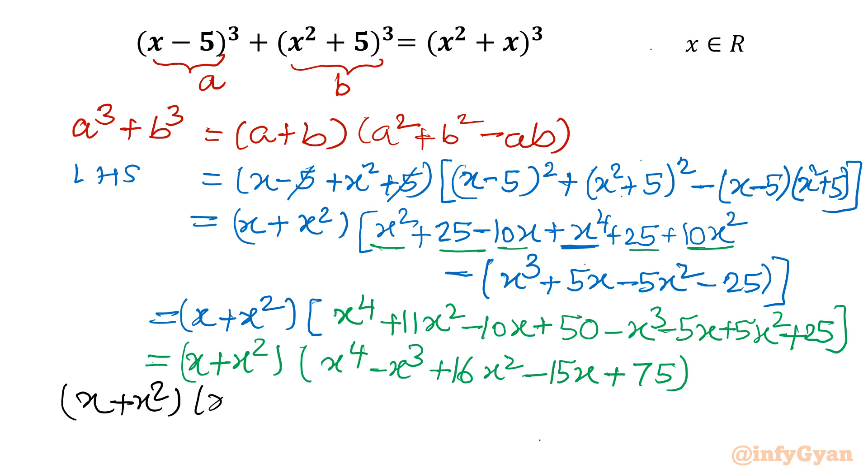Let me write (x + x²) in the first bracket. Then x⁴ - x³. Then we are having 11x² + 5x², which is 16x². -10x - 5x gives -15x. Then 50 + 25 equals 75. So let me write directly 75. That is our left hand side.